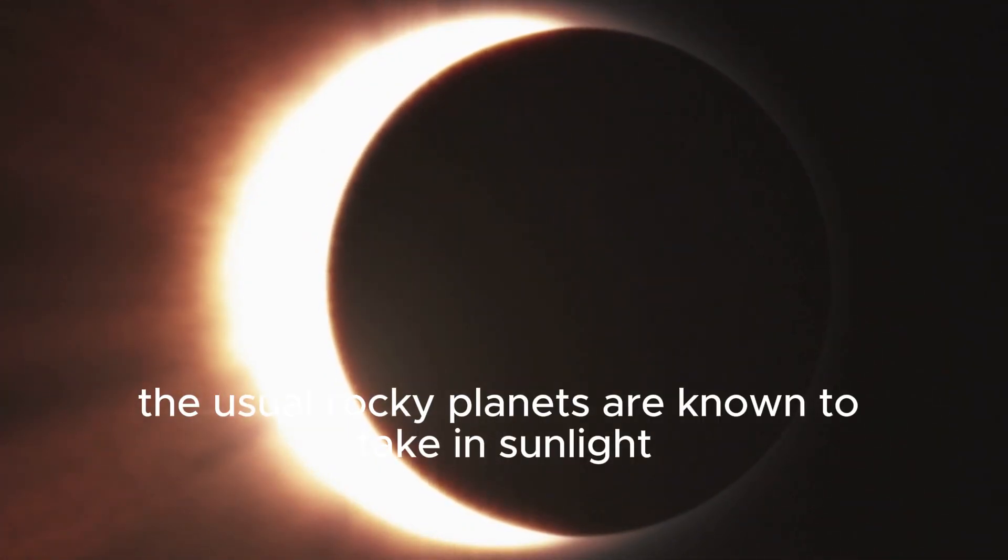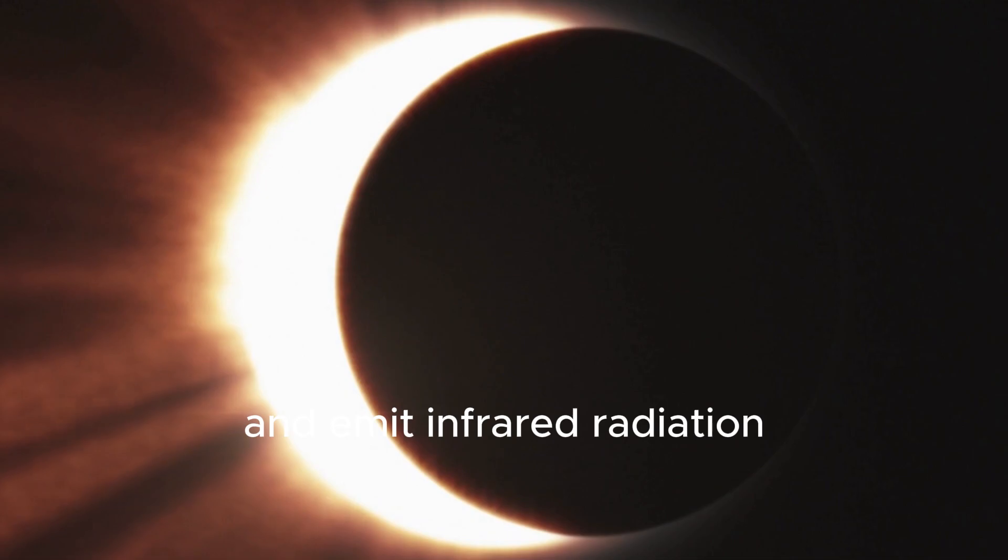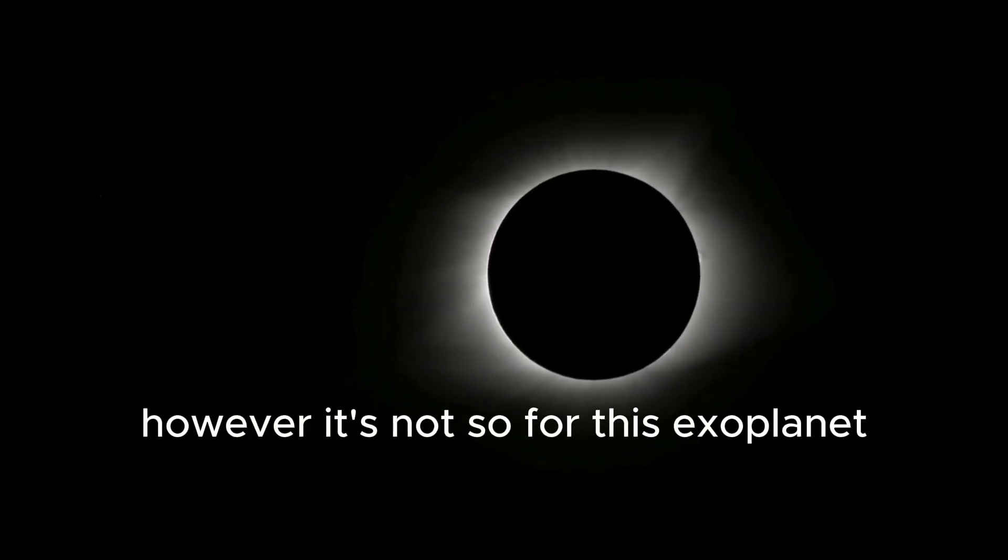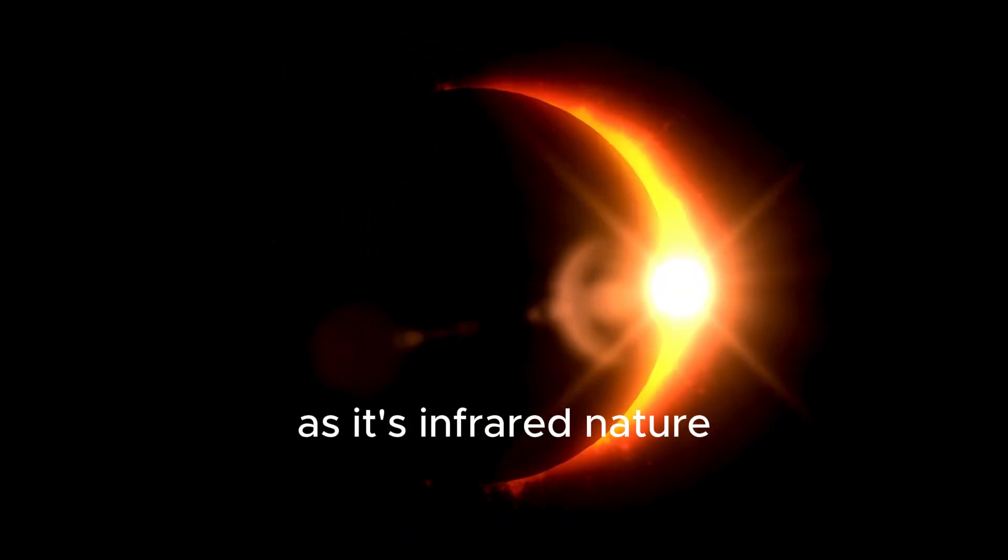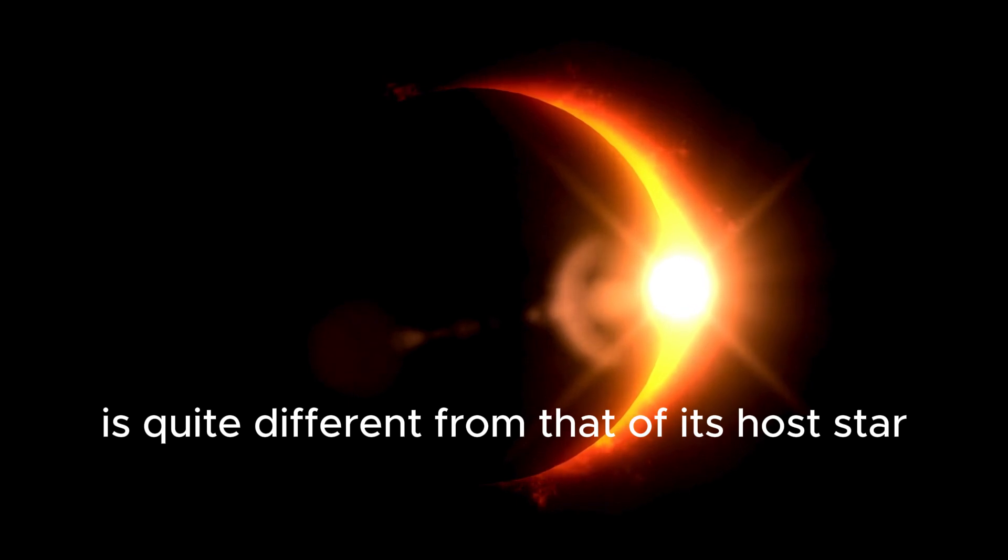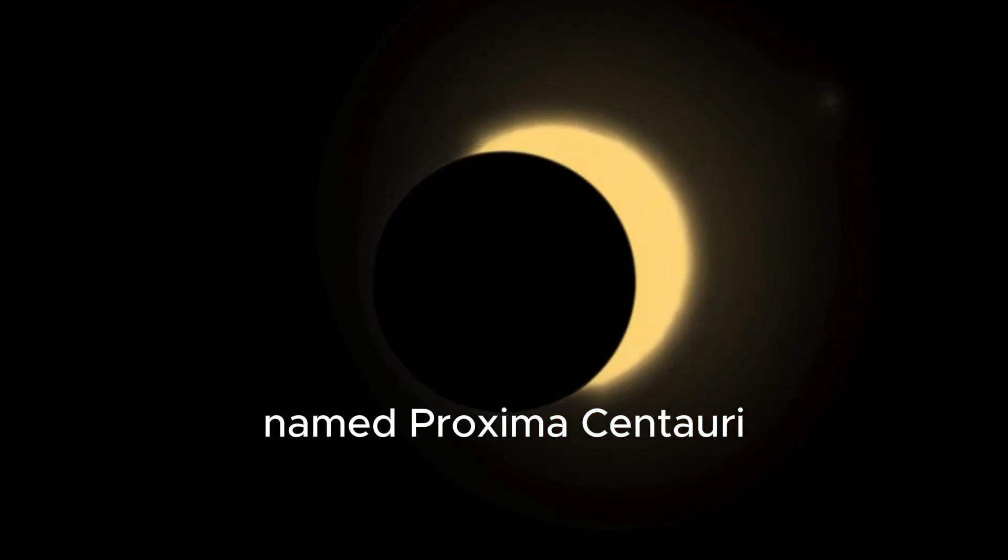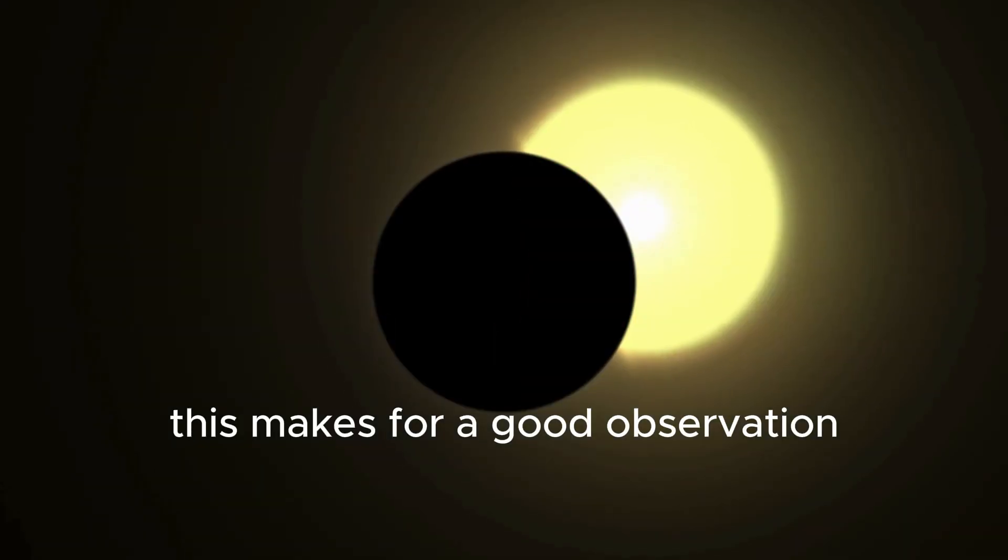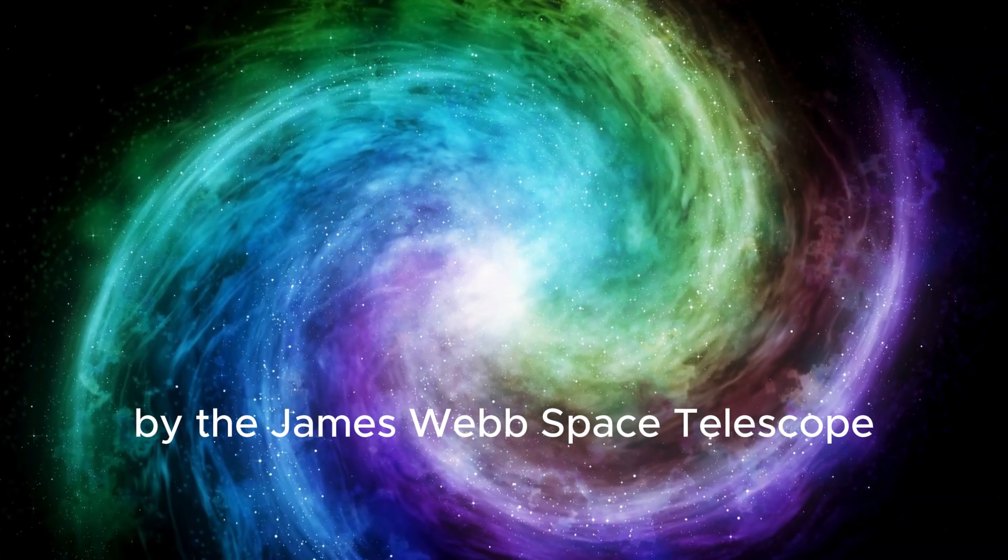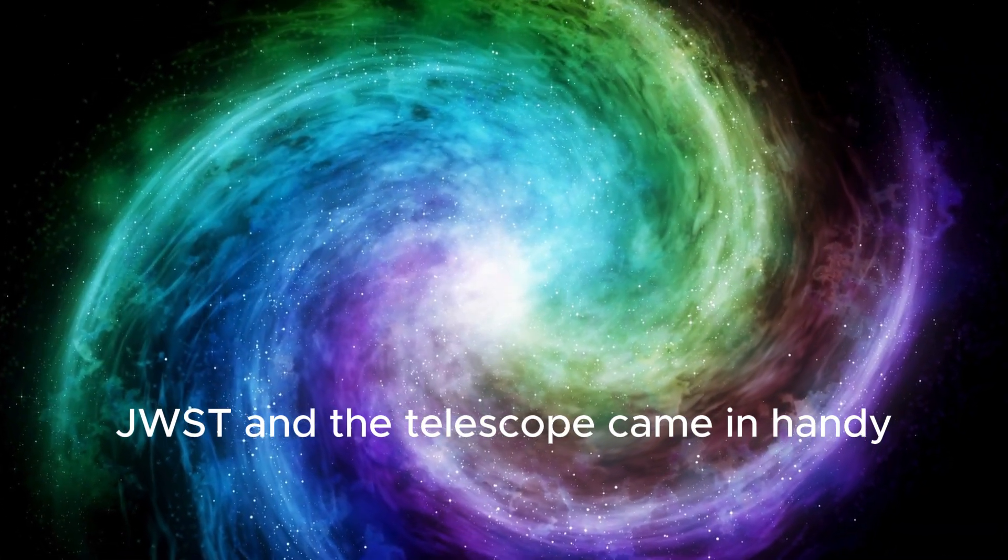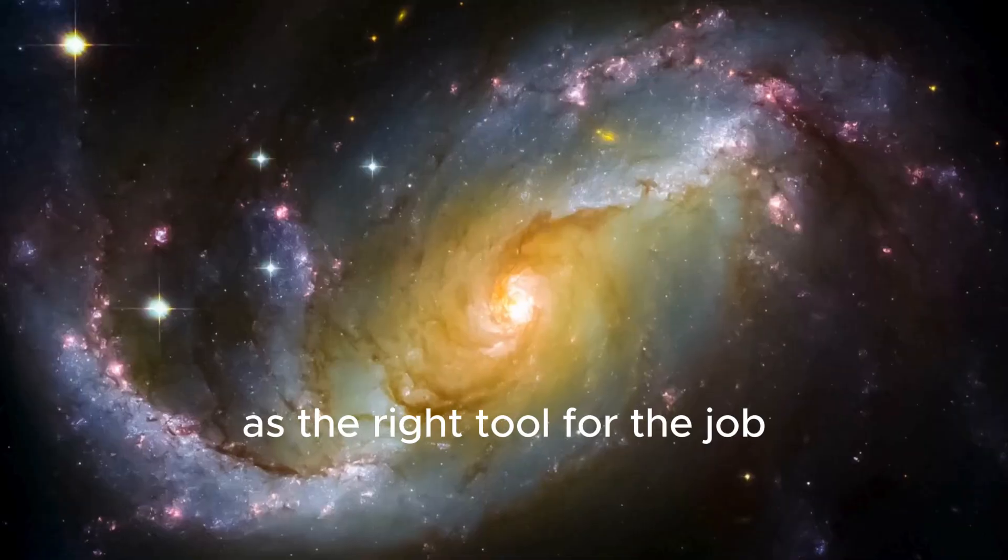The usual rocky planets are known to take in sunlight and emit infrared radiation. However, it's not so for this exoplanet, as its infrared nature is quite different from that of its host star Proxima Centauri. This makes for a good observation by the James Webb Space Telescope, and the telescope came in handy as the right tool for the job.